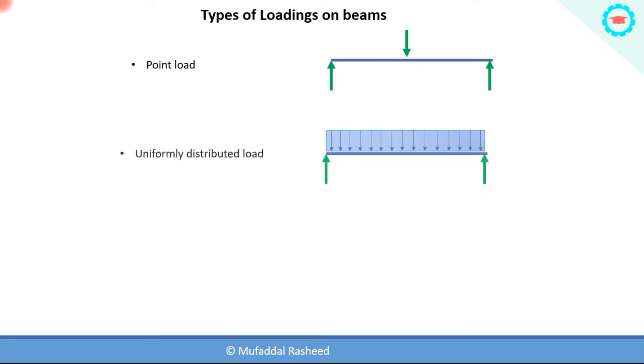The next type of loading is called the uniformly distributed load. You can see here an example of a simply supported beam having a uniformly distributed load, which is basically the load distributed throughout the span of the beam in a uniform manner. That is, no single point is under the action of a load; the whole span of the beam is under the action of the load.